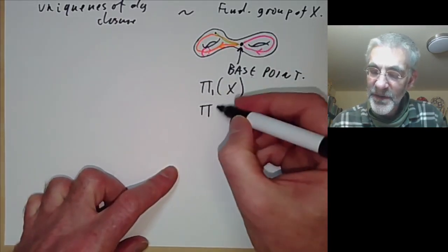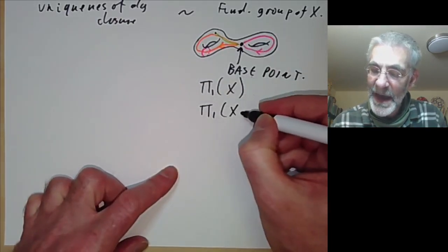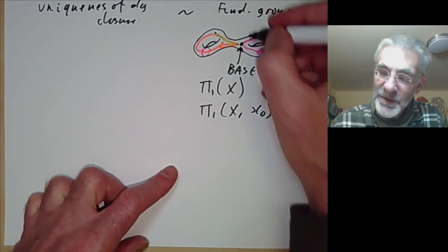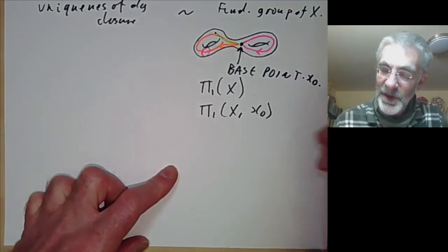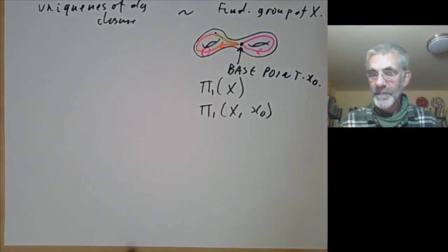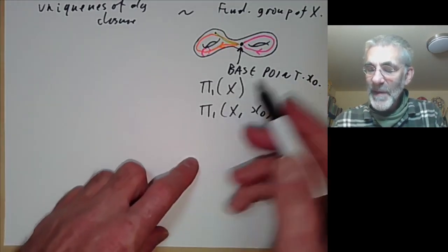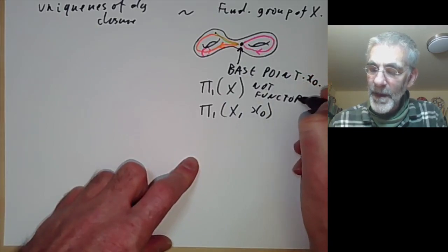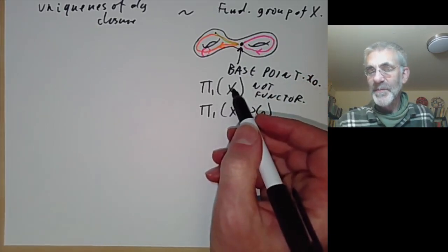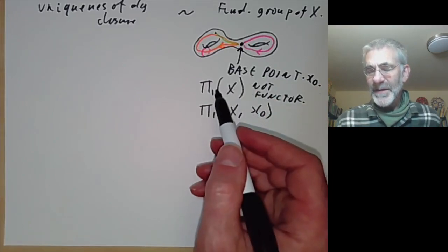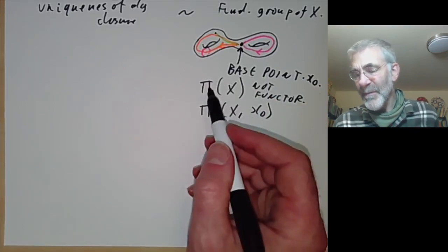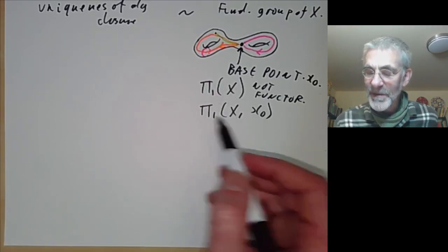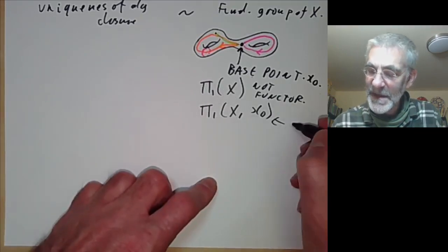What we should do is not define the fundamental group of a space X, but define the fundamental group of X with respect to a fixed base point x_0. The map x ↦ π₁(X, x_0) is not a functor if you don't pick a base point — if you've got a map between topological spaces you don't get a well-defined map on the fundamental group. However, with a fixed base point you do get a well-defined map, so that is a functor.